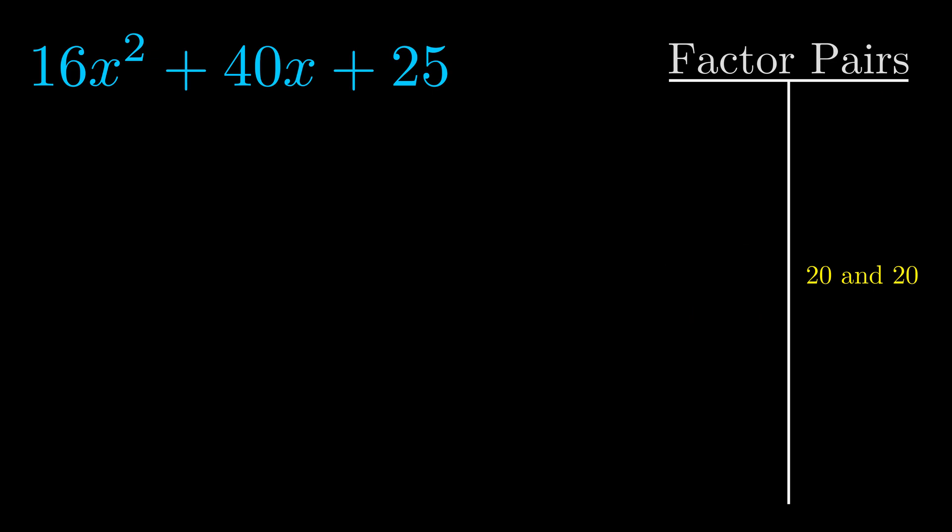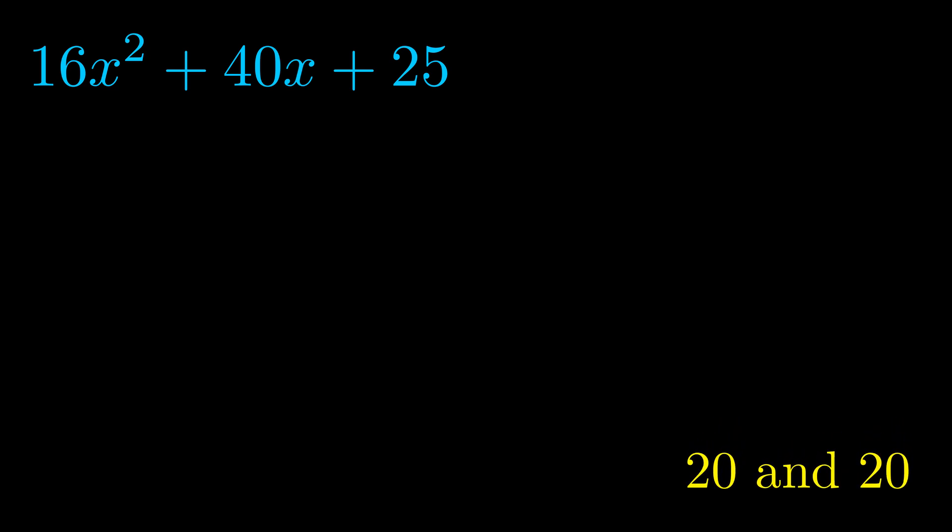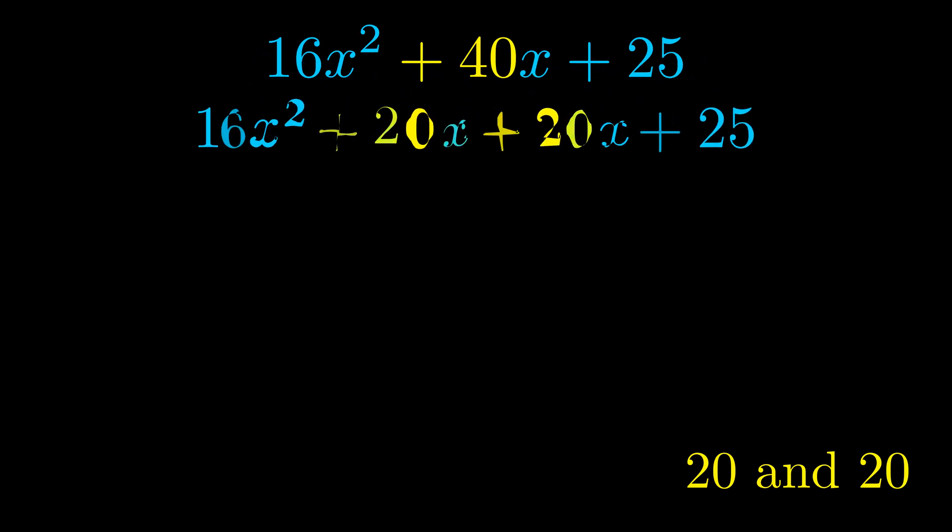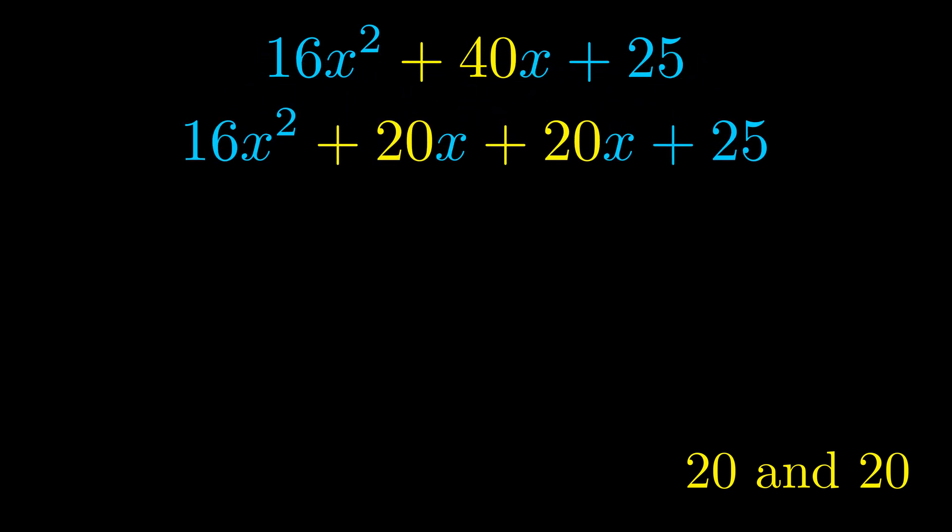Now once we have this factor pair what we want to do is we want to use it to split up the b value. Notice how I'm going to keep my first term and my last term completely unchanged. It is only this b term highlighted in yellow that gets expanded into this correct factor pair.